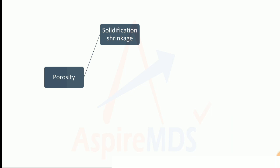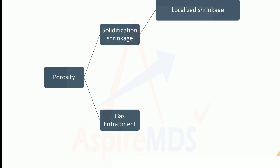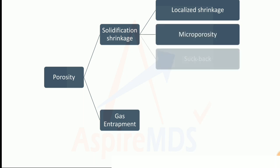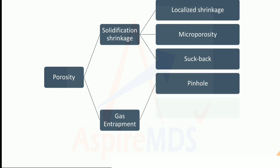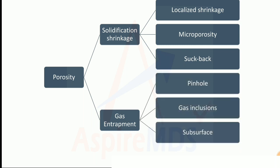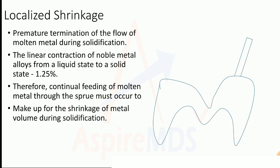Another way to classify porosity is based on the method by which it occurs. First is solidification shrinkage, and second is gas entrapment. Due to solidification shrinkage, we can have three types: localized shrinkage porosity, micro porosity, and suck back porosity. Due to gas entrapment, we can have pinhole porosity, gas inclusion porosity, subsurface porosity, and back pressure porosity.